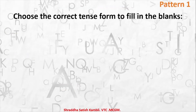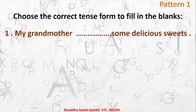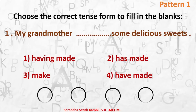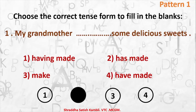Pattern 1 — choose the correct tense form to fill in the blanks. The sentence is: 'My grandmother __ some delicious sweets.' The options are: having made, has made, make, have made. The correct answer is option 2: 'My grandmother has made some delicious sweets.' So 'has made' will come in the blank.